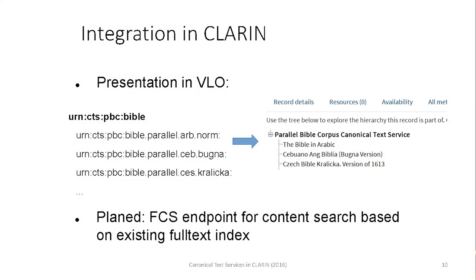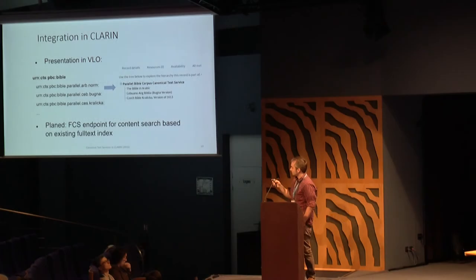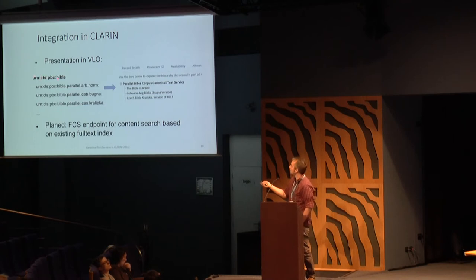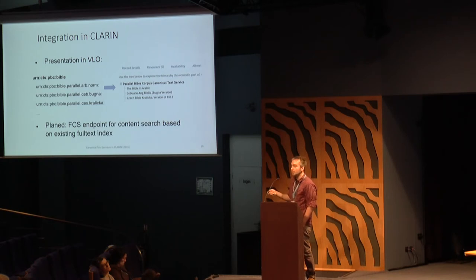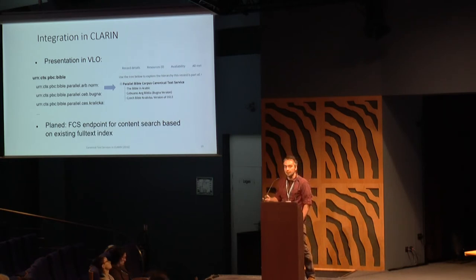Here you can see how this looks in the virtual language observatory. In CTS, this is called a text group, and this is converted to a collection in Clarion. For each of the CTS URNs on document level, one document in Clarion is created based on the meta information that is served by the canonical text service.